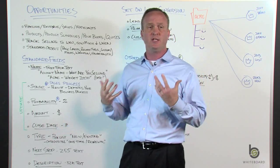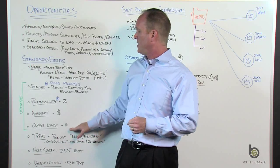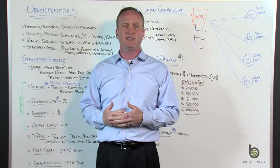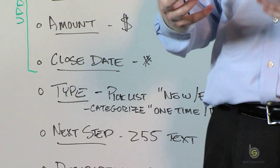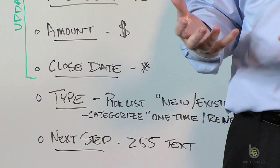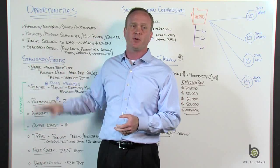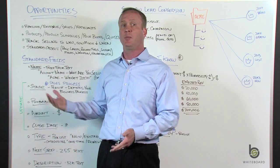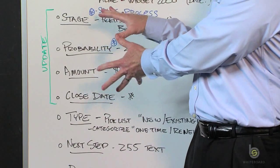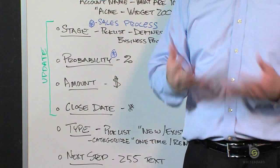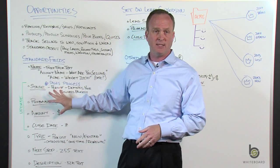The amount field is just the dollar amount of the opportunity — what you think it's worth from a revenue standpoint. Close date is your best guess on when you think that deal is going to close. Sales are fluid — you can go forward, then have to renegotiate, requote, or send something back to contracts. These fields get updated a lot, and a salesperson really needs to maintain them to keep all your pipeline and forecast reporting solid.